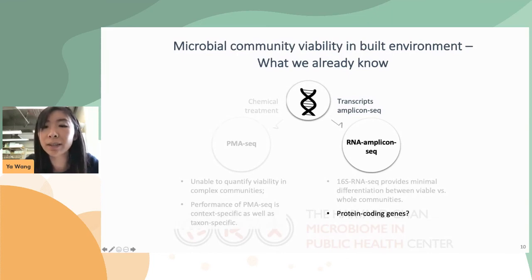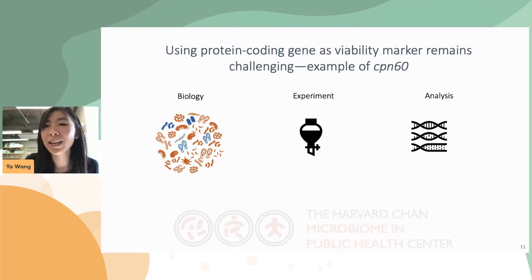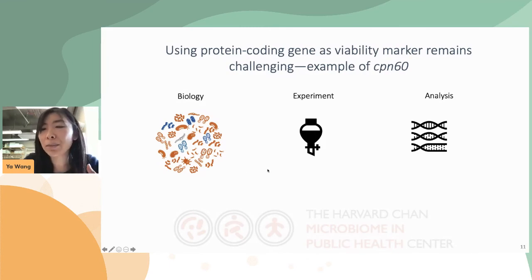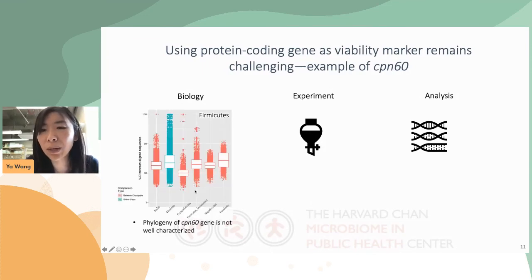Alternatively, protein-coding genes may be promising new markers for future assessment. However, the process was trickier than we had thought, and there were several challenges before we could apply it at scale. Here is an example using the CPN60 gene, which is a universal housekeeping gene in bacteria coding for a chaperone protein. From the biology aspect, the phylogeny of this gene is not well characterized.